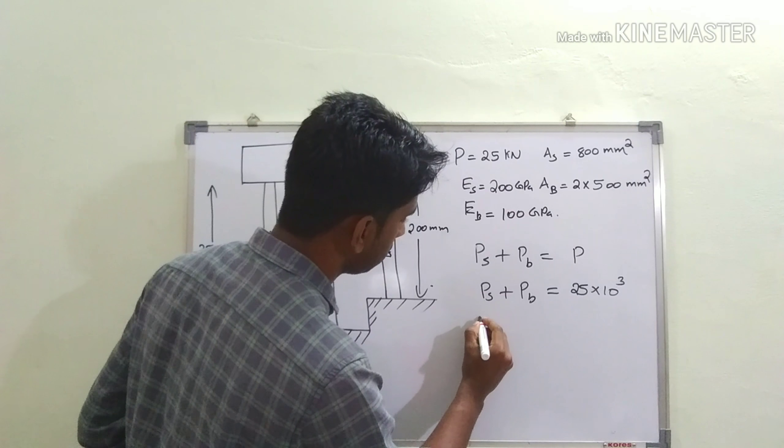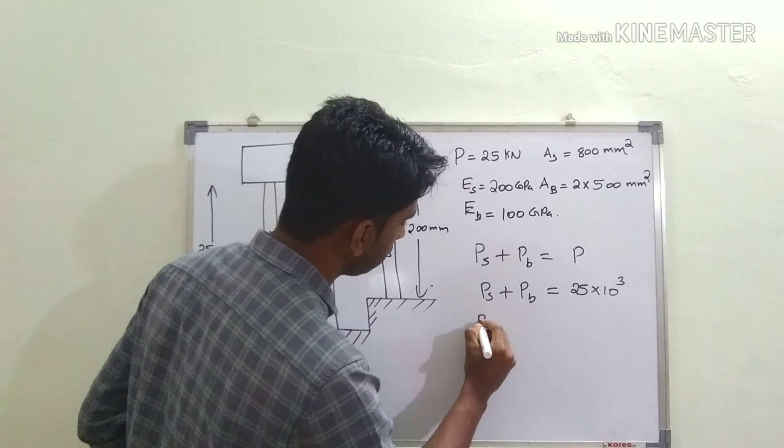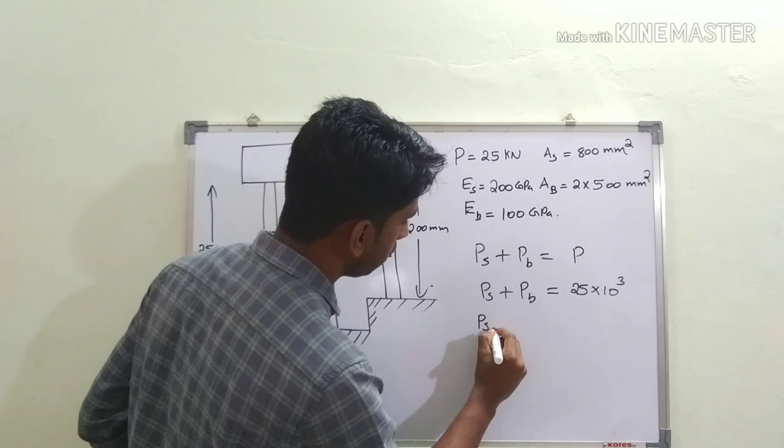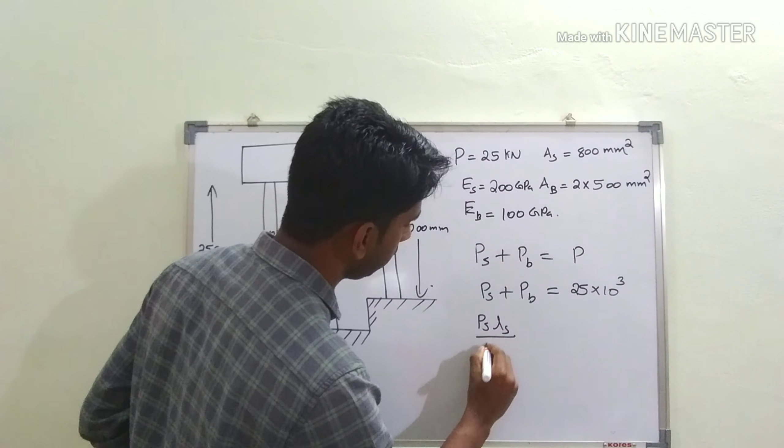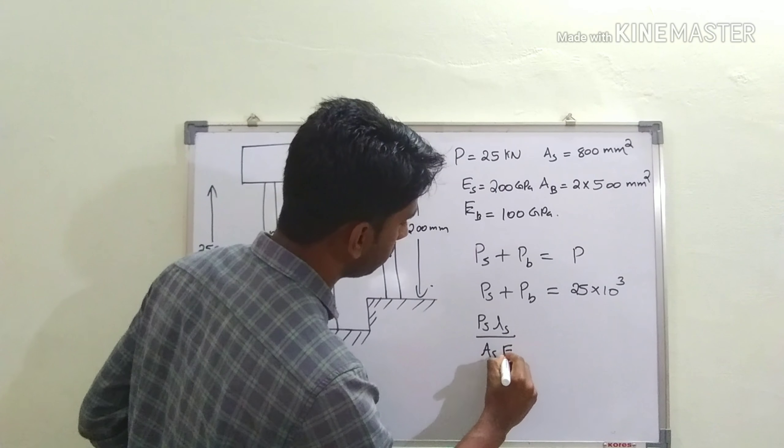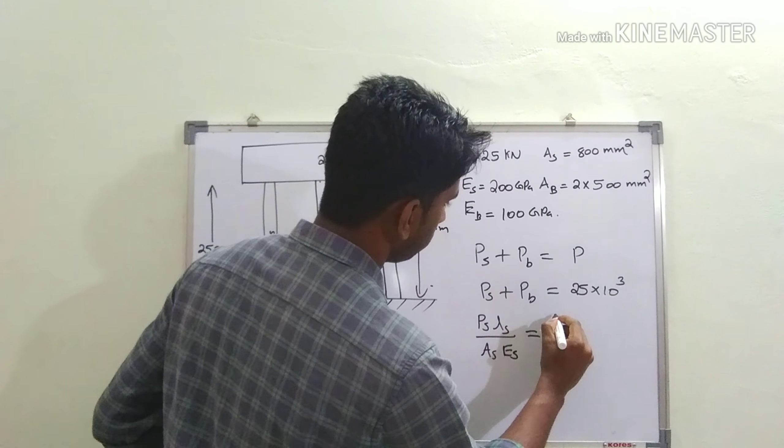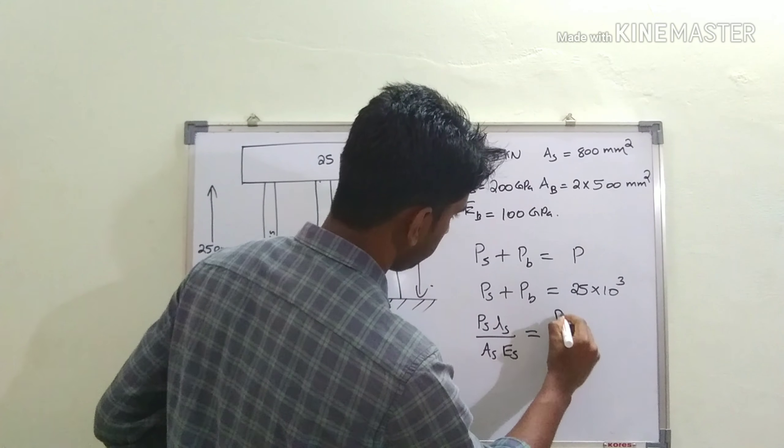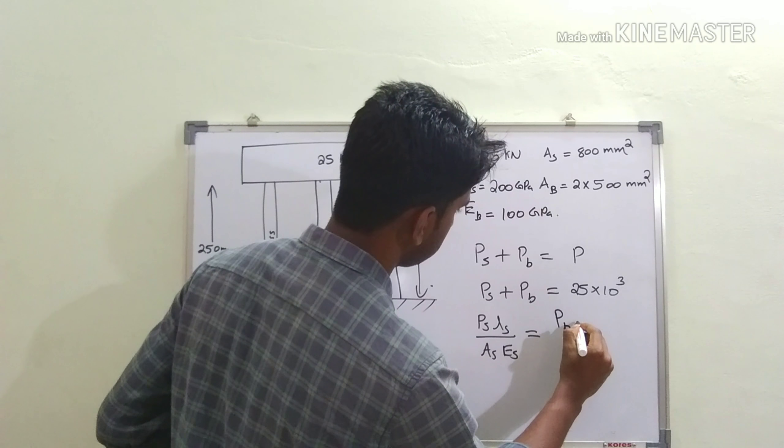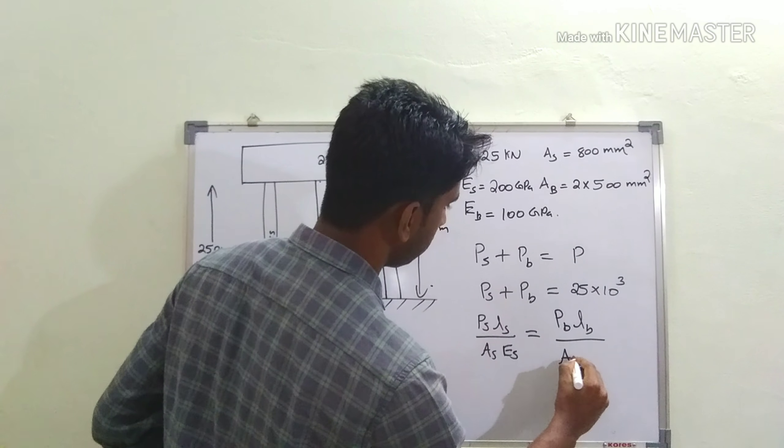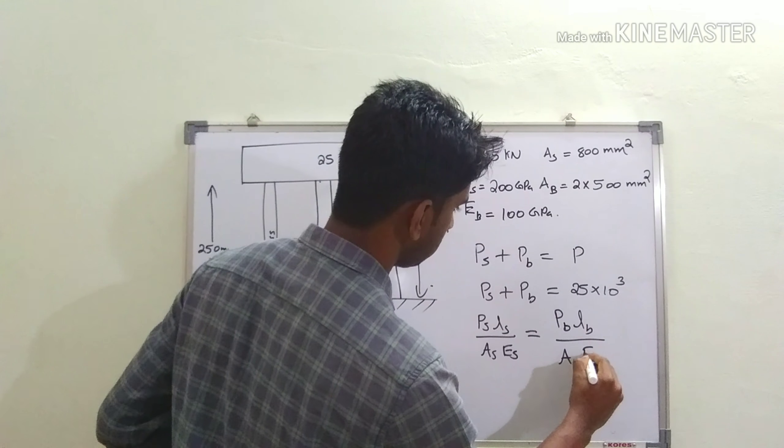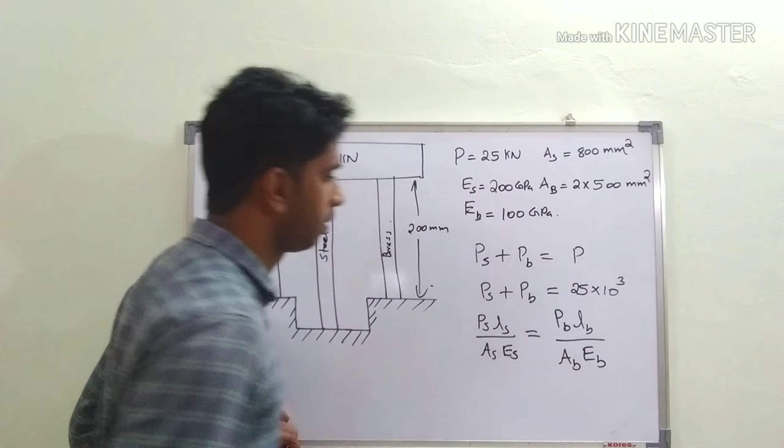Next, we write the compatibility equation: P_steel·L_steel/(A_steel·E_steel) = P_brass·L_brass/(A_brass·E_brass). Now you can substitute all the values of length, area, and elastic modulus here.